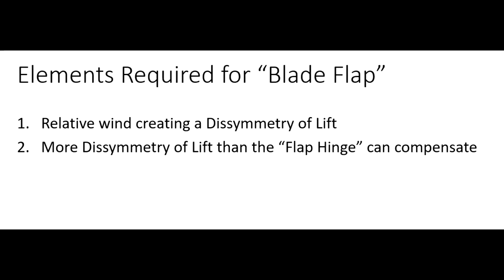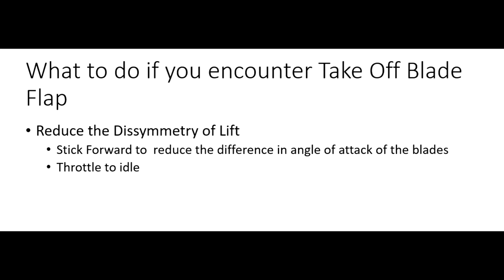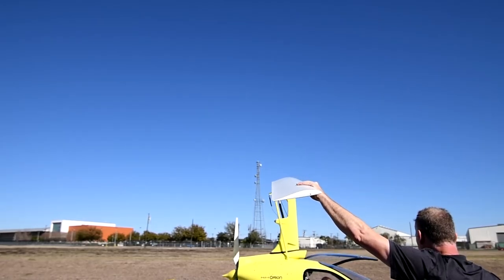Before discussing what to do if you experience blade flap, let's review the basic elements: you have to have dissymmetry of lift — caused typically in a takeoff by forward motion of the gyroplane — and you have to have excessive blade flapping to the point where the rotors have hit the stops on the rotor head. If you experience blade flap on a takeoff roll, you do two things: move the stick to the forward-most position and reduce the throttle to idle. If you have time, you may try braking. The goal is to reduce dissymmetry of lift — moving the stick forward decreases the angle of attack of the advancing blade and effectively reduces lift on that blade.